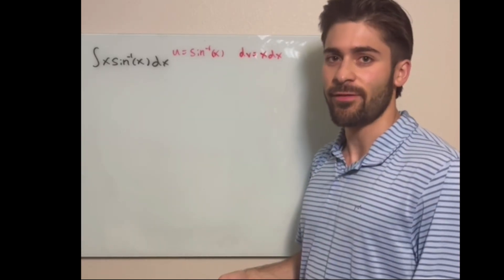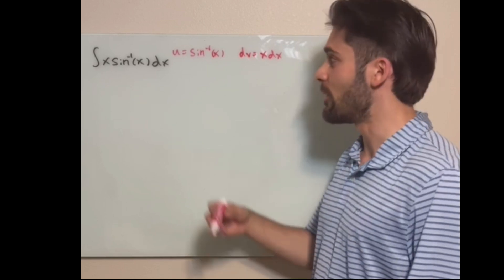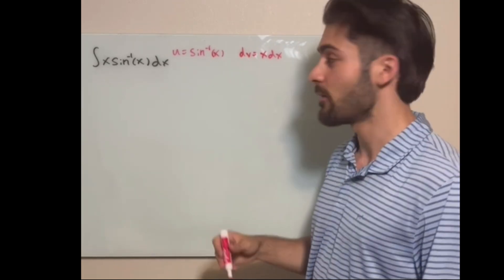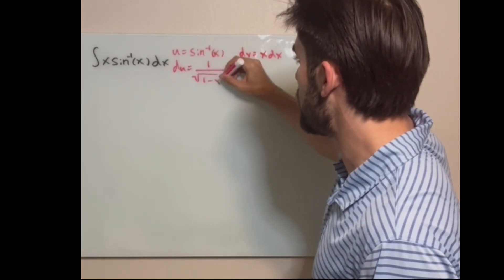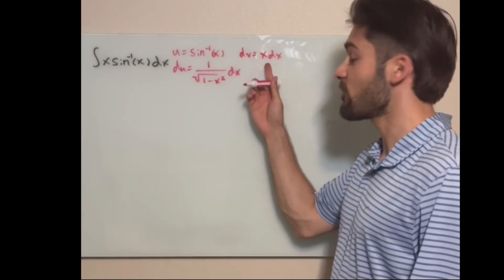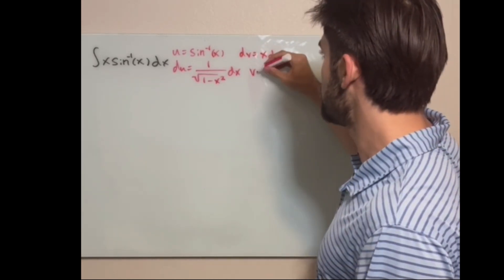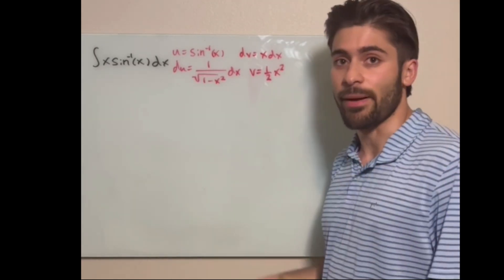We next find du by taking the derivative of u, which if you remember, the derivative of sine inverse is this. And so v is the anti-derivative of x, which is one half x squared. Now we can integrate by parts.